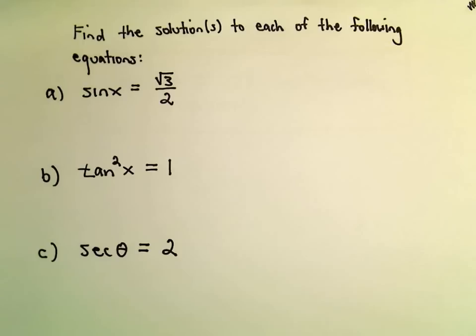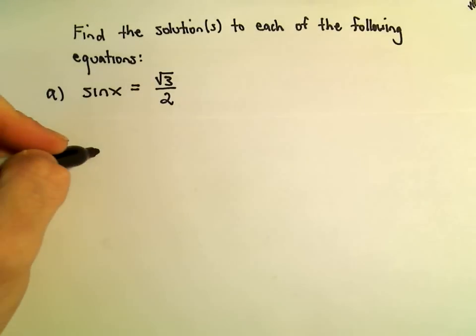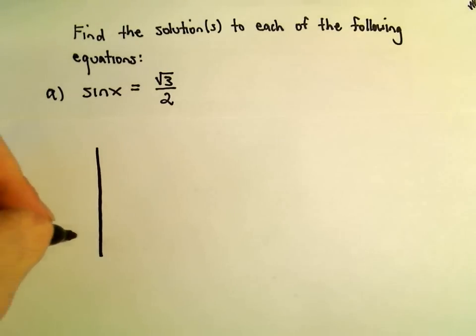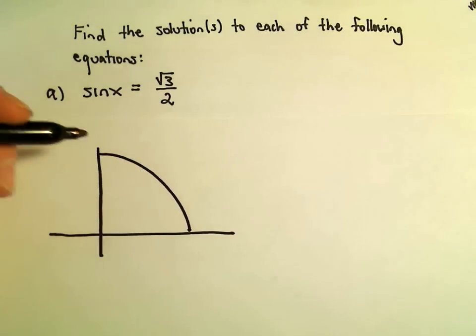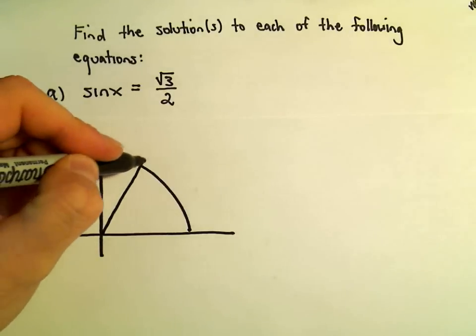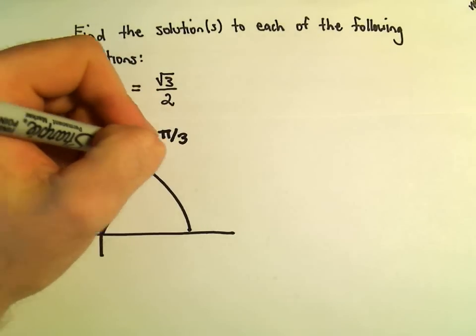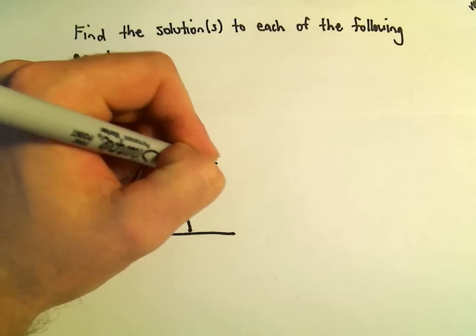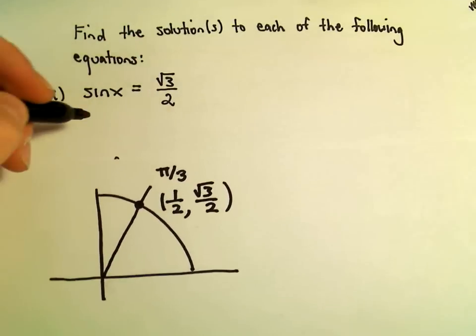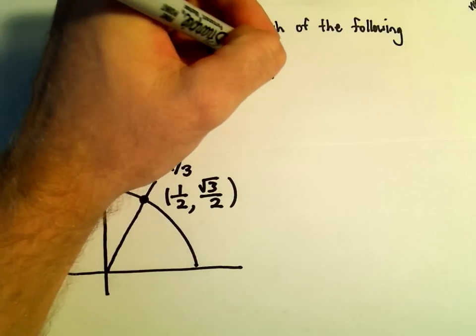Suppose we want to find all solutions to sine x equals root 3 over 2. This is one of these values I think you just have to have memorized. So it goes back to the unit circle, and recall that on the unit circle at the angle pi over 3 radians, the x-coordinate is 1 half, but the y-coordinate is root 3 over 2. So definitely we can say one of our solutions here is going to be x equals pi over 3.